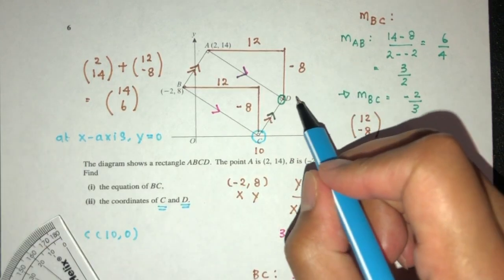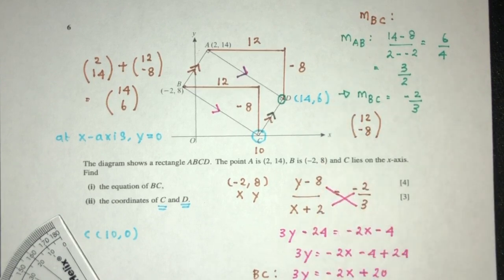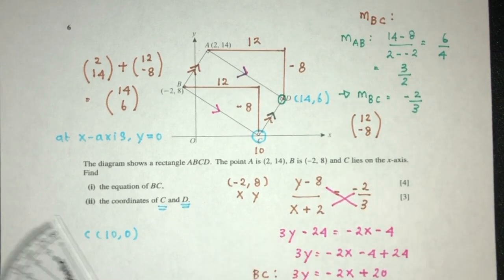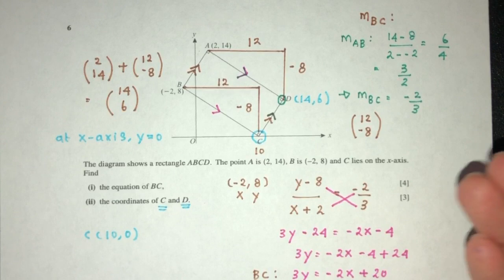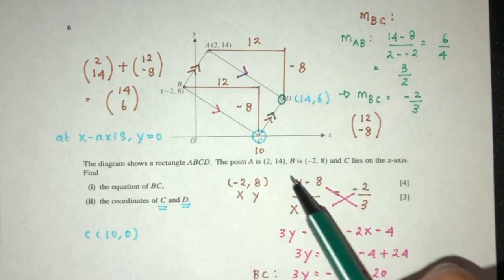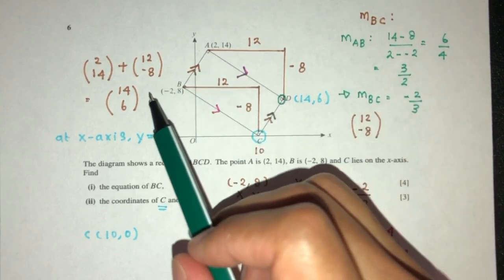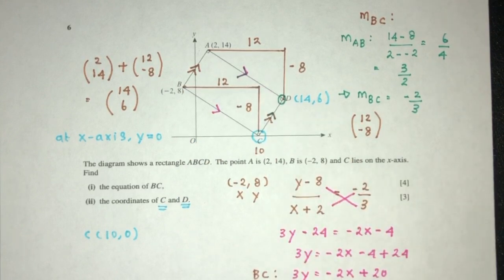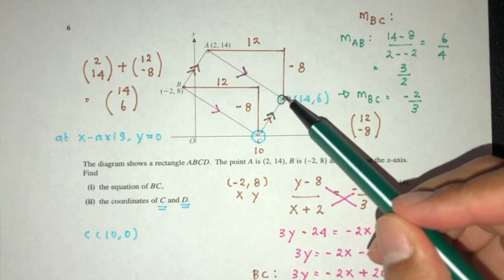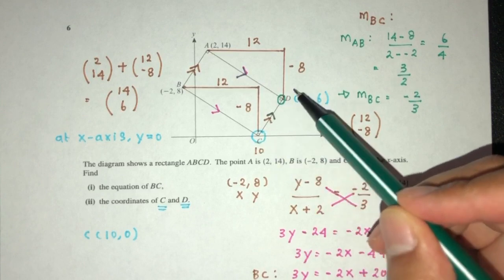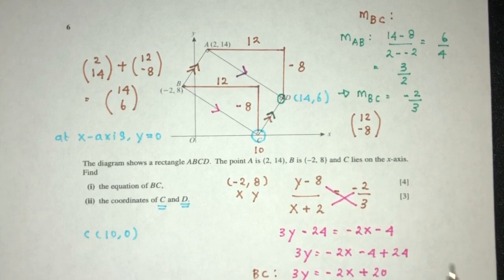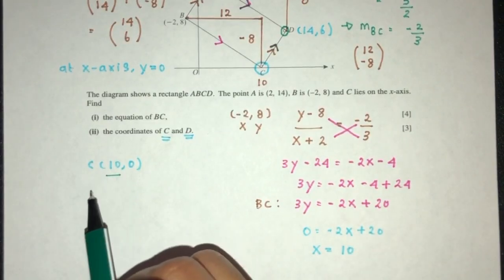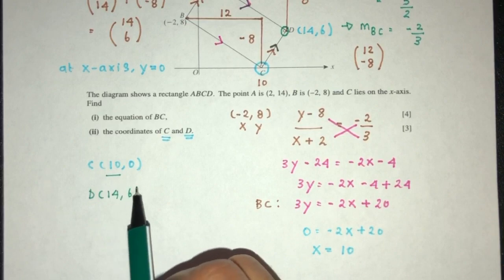So the point D will be (14, 6). But again, that is only one method of doing that. Usually I would not go this way because I do not want to confuse people. But I hope that is simple as well because it is very easy to use this method because we know these two sides have to be in the same direction, so we can use vector displacement. Again, the first method also is very easy. The point D is a point of intersection between CD and AD. We can just find those two equations and solve them simultaneously. It is up to you. The point C is (10, 0), the point D will be (14, 6). Okay.